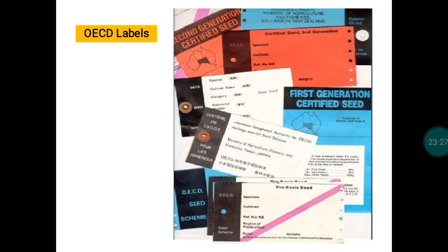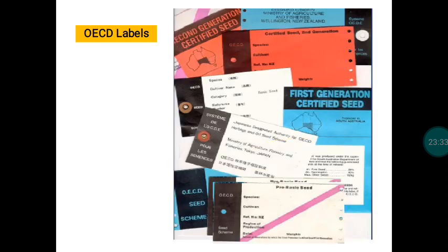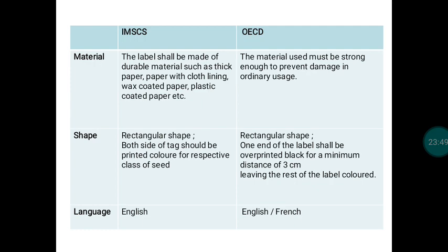These are the OECD labels for various categories. In all certificates, black color stripes of 3 cm will be present regardless of whether the material is Pre-Basic, Basic, or any generation of Certified Seed.